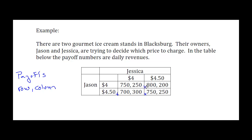We have one more possibility. Remember, there may not be an equilibrium in pure strategies, and that's okay. Let's check $4, $4. If Jason is choosing $4 and Jessica's choosing $4, Jason's getting 750. If he changes to $4.50, he gets 700 — so he's not changing. If Jessica picks $4 she gets 250; 250 is bigger than 200 that she would get for switching to $4.50, so she doesn't want to change. So our Nash Equilibrium of this game is $4 for Jason and $4 for Jessica.